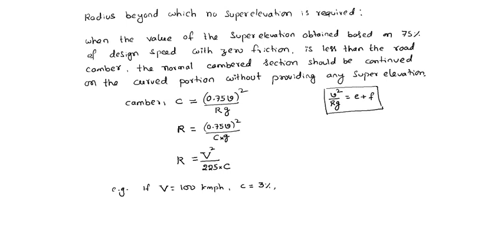For example, if V equals 100 kmph and C equals 3%, then R equals 100 squared divided by 225 into 0.03, which equals 1481 meters.